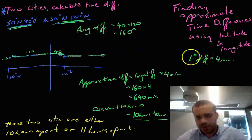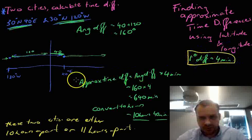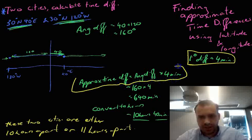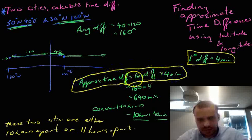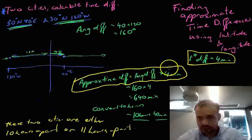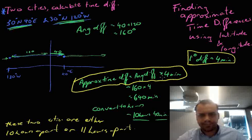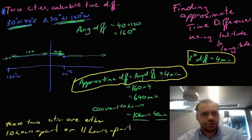OK, so very important here. One degree of difference equals 4 minutes. That's what we've learnt today. And this formula here, the approximate time difference between two towns is equal to the angular difference, only if you're going east and west, not up and down, times 4 minutes. That's finding approximate time differences using latitude and longitude.